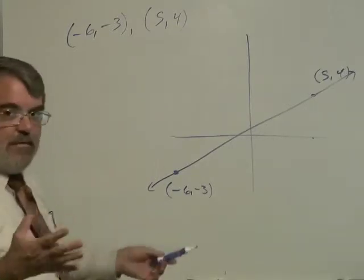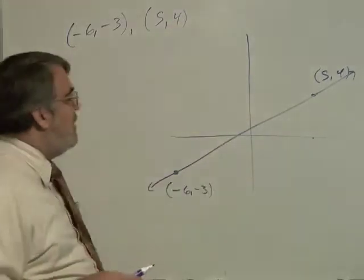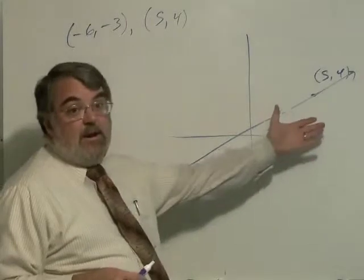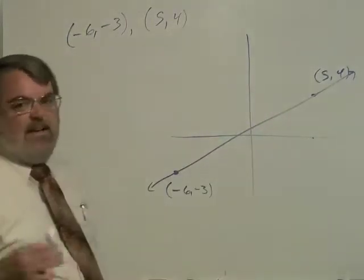Again, I'm freehanding this. I'm not doing this on graph paper, so I could be a little bit off here in my estimates. But at least you can see that if your slope is negative, or if your y-intercept is way up here or way down there, it has to be wrong.